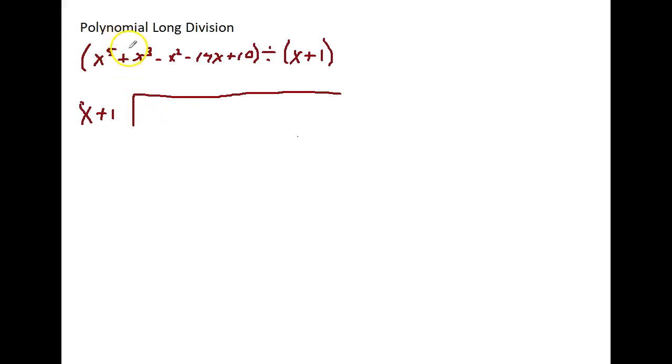what you need to do, if it skips powers, like there's no x to the 4th, we're going to fill in with 0. So I have 1x to the 5th power plus 0x to the 4th power plus 1x to the 3rd power minus 1x to the 2nd power, minus 14x to the 1st power and plus 10 which is x to the 0 power because there are no x's.